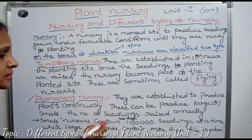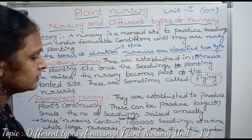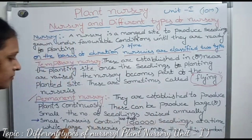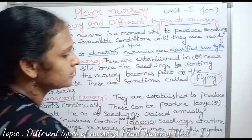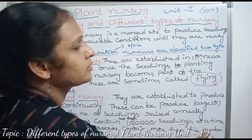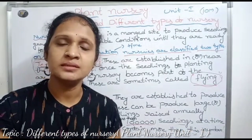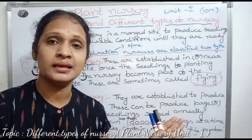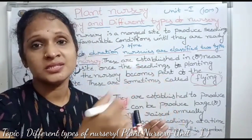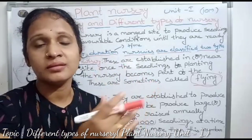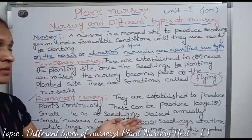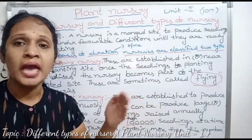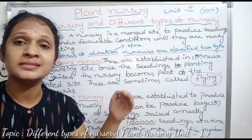Small nurseries contain less than one lakh seedlings, while large nurseries contain more than this number. Small nurseries contain less than one lakh seedlings; large nurseries contain more than one lakh seedlings.